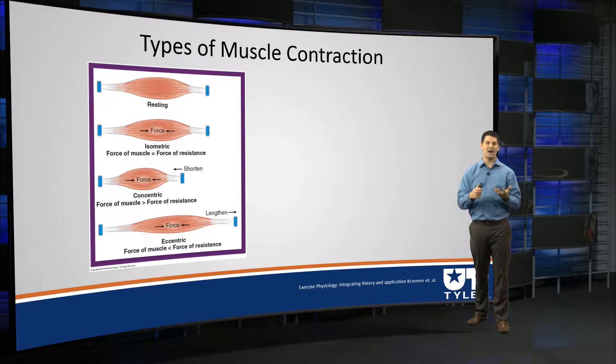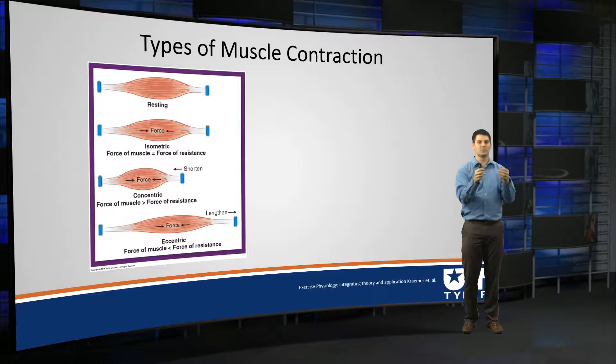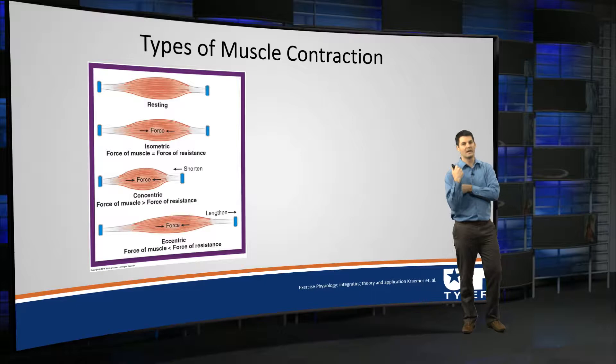Actin and myosin form crossbridges and we pull the actin closer together. Since the actin is tightly bound to the sarcomere at the Z line, that sarcomere then decreases in size — we're shortening the muscle, shortening the sarcomeres. We put a bunch of sarcomeres in series, and that muscle then becomes shorter. When we shorten our muscle, we are then able to produce the known movement.